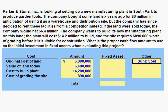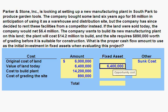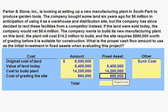The original $6 million cost of the land is a sunk cost and is not included in our fixed asset base. The value of the land today, the $6.4 million, is an opportunity cost and should be considered as part of our relevant cost for analyzing our project, as should the $14.2 million project cost and the $890,000 cost for grading. The total project cost that should be included as a fixed asset when evaluating this project is $21,490,000.